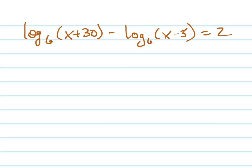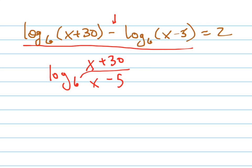They want us to solve this equation. The first thing we're going to do is condense the left side. We can do that by subtracting. The rule for when you're subtracting two logs with the same base is you use division. So it's log base 6 of (x plus 30) all over (x minus 5) equals 2.